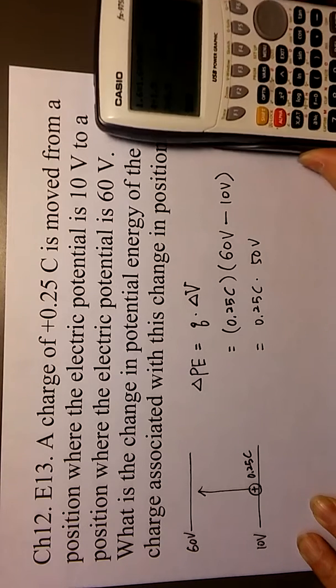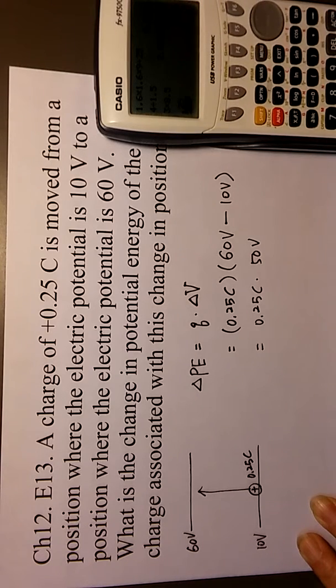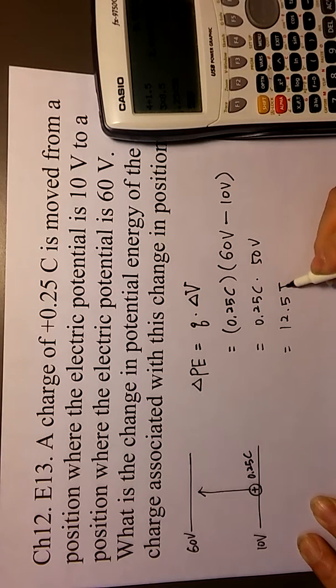0.25 coulomb times 50 volt. Then you can calculate 0.25 times 50. Then you will get 12.5 joule.